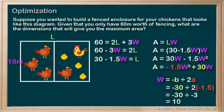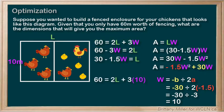So the width is going to be 10 meters. To find the length, we look at our constraint again. Now that we know W is 10, we have 60 equals 2L plus 3 times 10, so 30 equals 2L, meaning L is going to be 15 meters. This gives us a 10-meter by 15-meter enclosure for the maximum area.